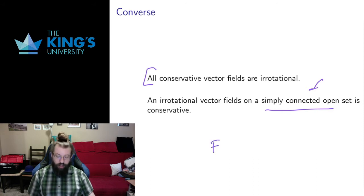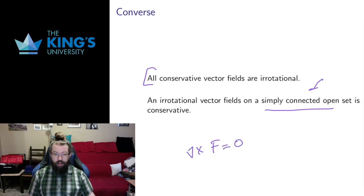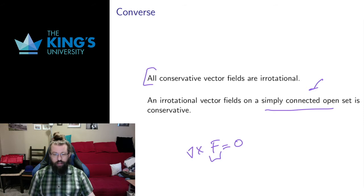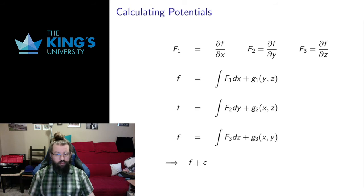That means we have a check: if we have a vector field and we take the curl and the curl is zero, and if that works on a simply connected open set — if we can restrict the domain of F to a simply connected open set — then we can conclude that F is conservative on that set. Conservative vector fields come from potentials; they are the gradients of some scalar field, which I call a potential. I'd like to calculate those potentials, so let me talk about how to calculate the potential of a conservative vector field.